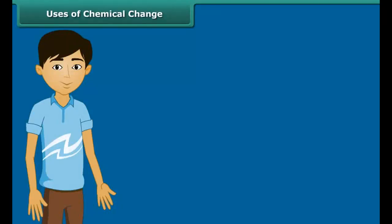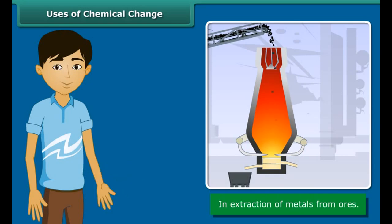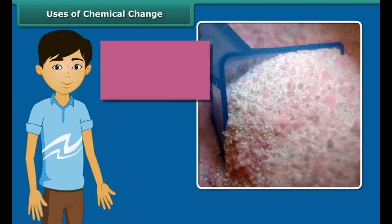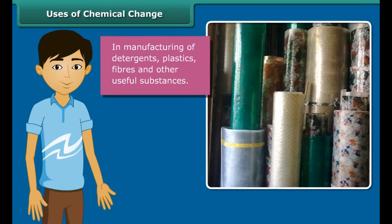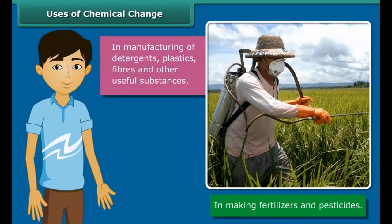Do you know the importance of chemical changes in our life? Chemical changes are useful in extracting metals from ores, manufacturing medicines, and producing artificial and useful substances like detergents, plastics, fibres, fertilizers, and pesticides for agricultural purposes.